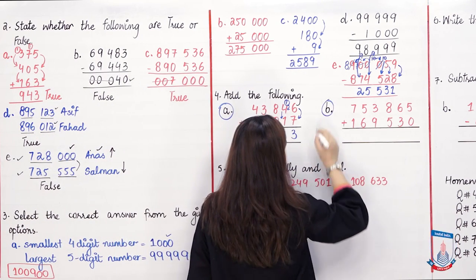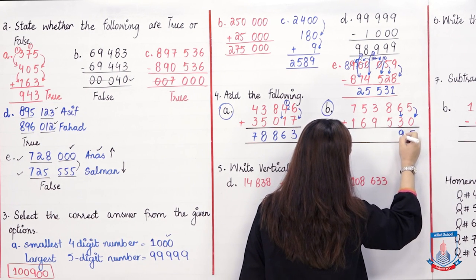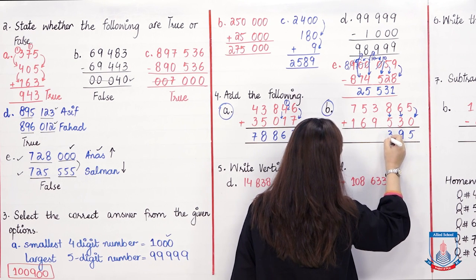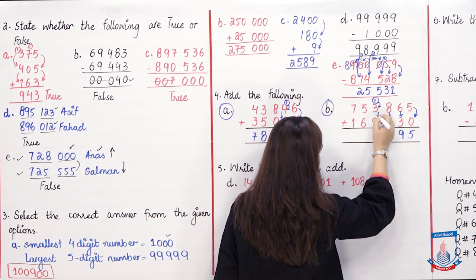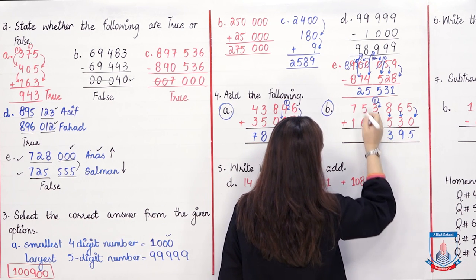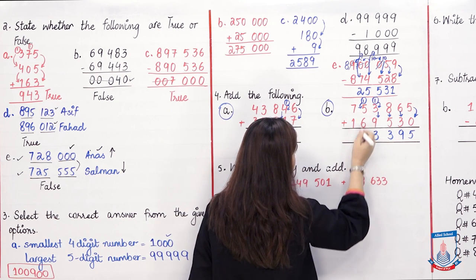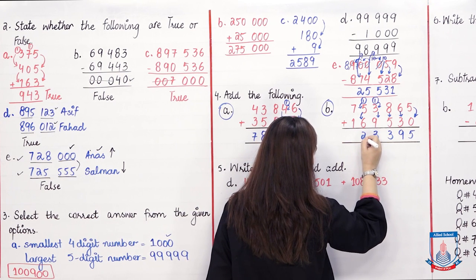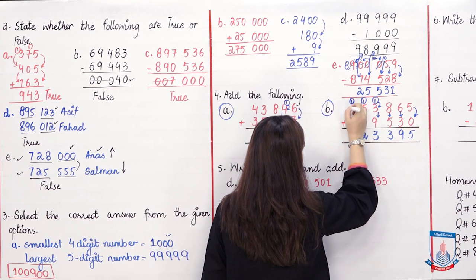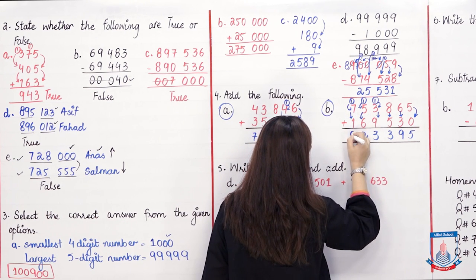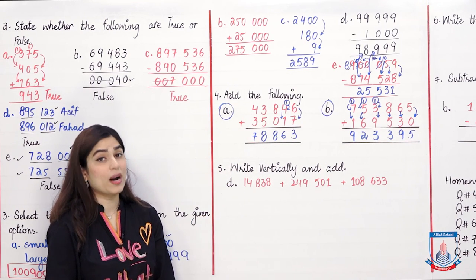Part B: 5 plus 0 is 5, 6 plus 3 is 9, 8 plus 5 is 13 — write 3, carry 1. 1 plus 3 is 4, 4 plus 9 is 13 — write 3, carry 1. 5 plus 1 is 6, 6 plus 6 is 12 — write 2, carry 1. 7 plus 1 is 8, 8 plus 1 is 9. That value is our answer. I have solved two parts; the remaining two are homework for you to practice.